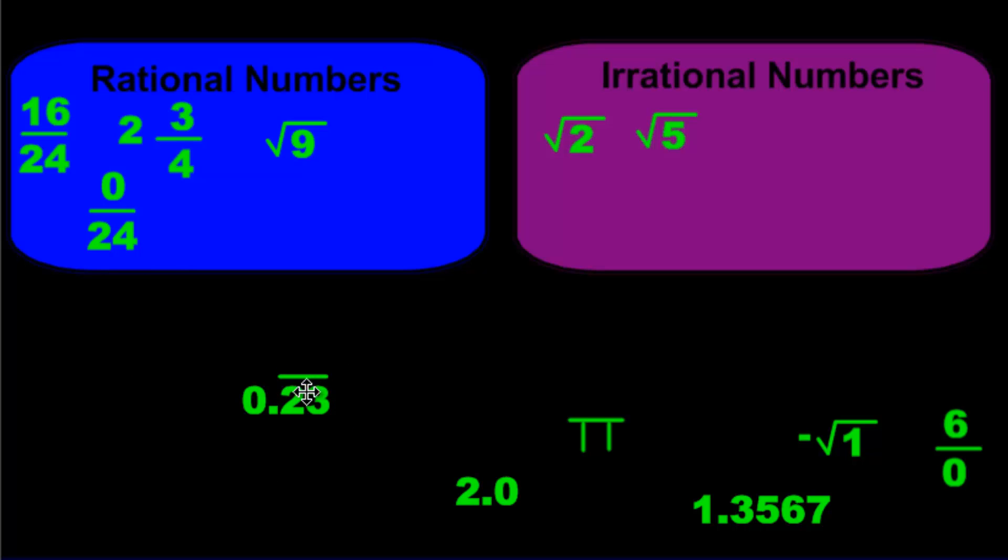How about this one? What is that? Well, that's a repeating decimal. It repeats over 2, 3, 2, 3, 2, 3. That is definitely a rational expression. You can write that as a fraction. It'll just be 23 over 99.